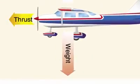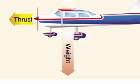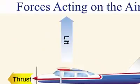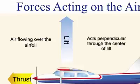Weight is the combined load of the aircraft itself, the crew, the fuel, and the cargo or baggage. Weight pulls the aircraft downward because of the force of gravity and is opposed by lift. Lift opposes the downward force of weight, and is produced by air flowing over the airfoil, acting perpendicular to the flight path through the center of lift.